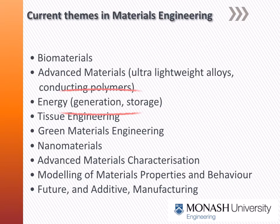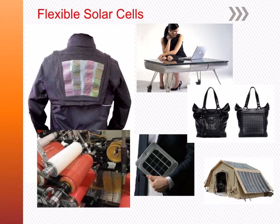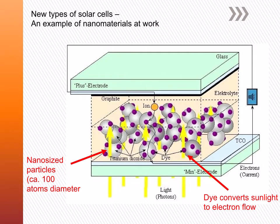Other areas include energy, where renewable energy is ultra important these days. We have a significant research thrust in flexible solar cells which can literally change the way in which we live and how we gather and store energy moving into the future. Dye-sensitized solar cells are a special subset heavily focused on in the department — a new type of solar cell and an example of nanomaterials at work, where a dye loaded with nano-sized particles around 100 atoms in diameter can convert sunlight into an electron flow.